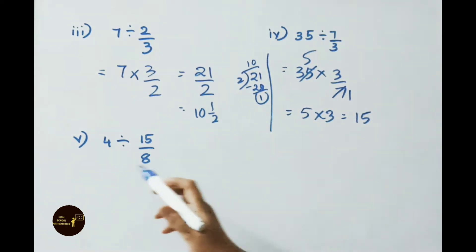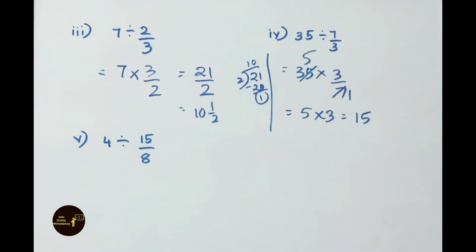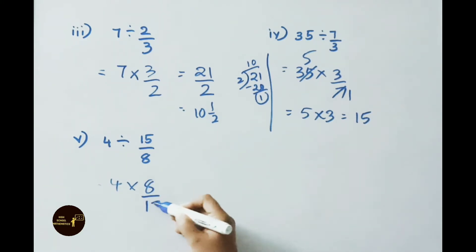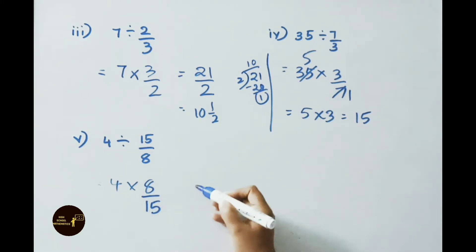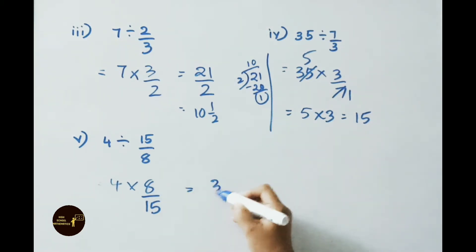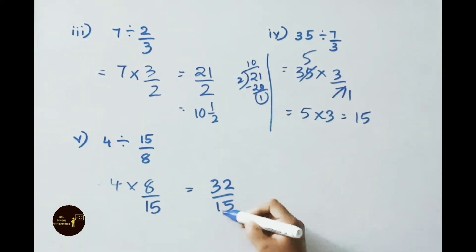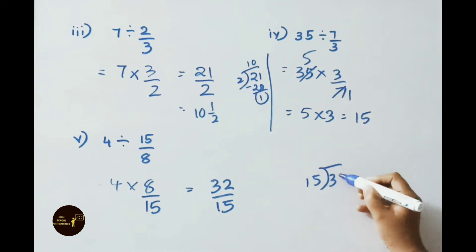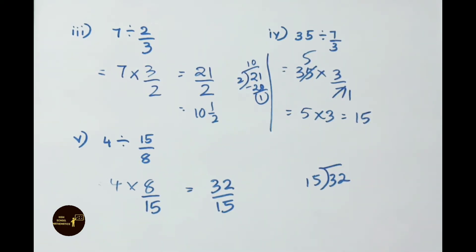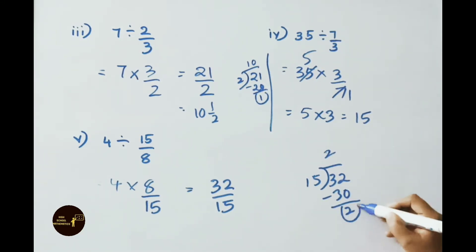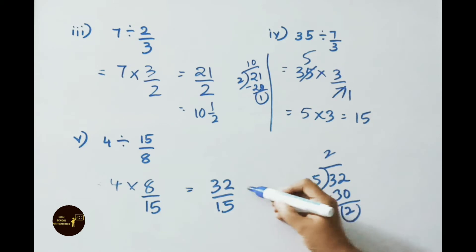See the 5th sum: 4 divided by 15/8. That equals to 4 × reciprocal of 15/8, which is 8/15. Multiply the numerators: 4 × 8 = 32, by 15. Simplify this by using division. We are going to divide 32 by 15. 15 × 2 = 30, 32 minus 30, remainder 2. So the answer is 2 and 2/15.